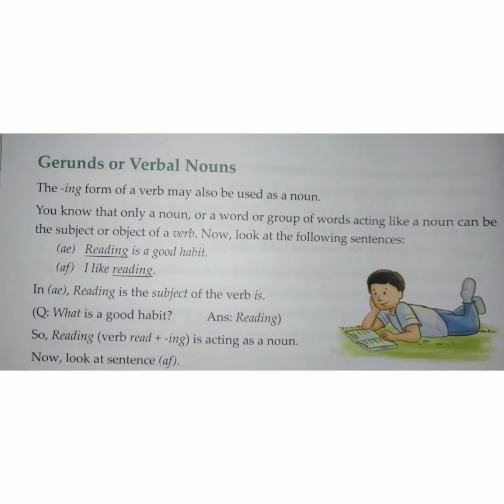Next we have gerunds. Gerunds are basically the 'ing' form of a verb that may also be used as a noun. They are also known as verbal nouns. When we change the category of a verb into a noun by adding 'ing' at the end, it becomes a gerund. For example, 'sit' becomes 'sitting' and acts as a noun. It can also act as a subject — for example, 'reading is a good habit.' Here 'read' is used as a verb, but when we add 'ing', it becomes a noun.